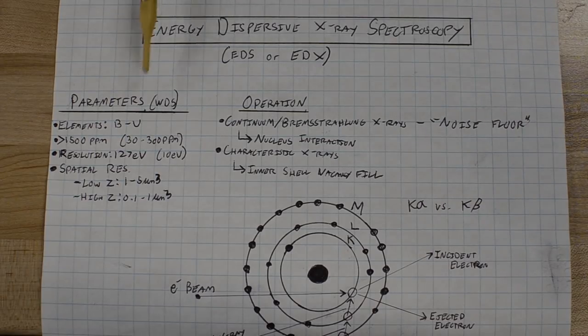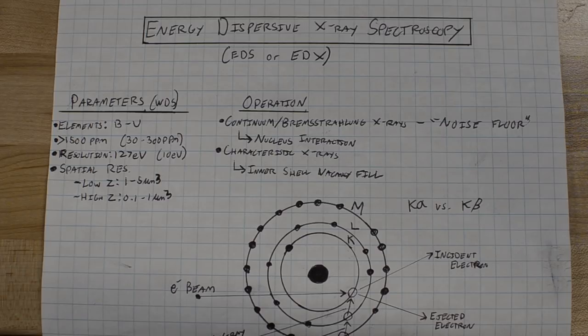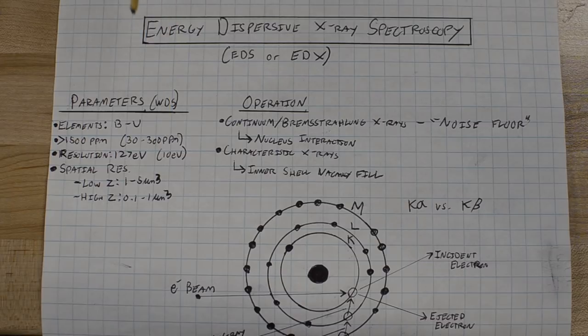There's another technique called WDS, Wavelength Dispersive Spectroscopy, and these are larger spectrometers and they are a little bit better actually than the EDS system, but they're less convenient and more expensive. Some of the basic parameters of EDS are given here and in parentheses I have WDS just so you can compare it.